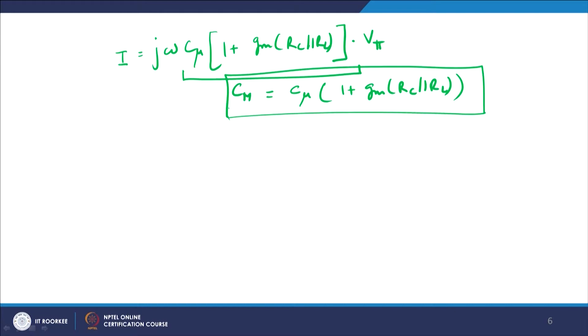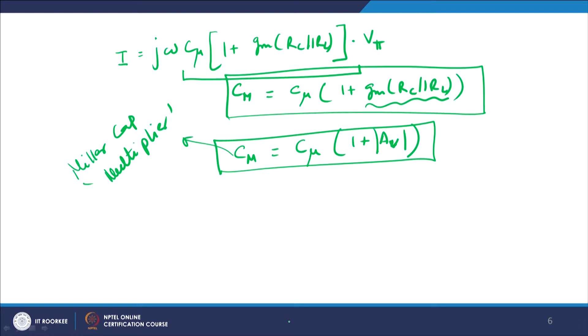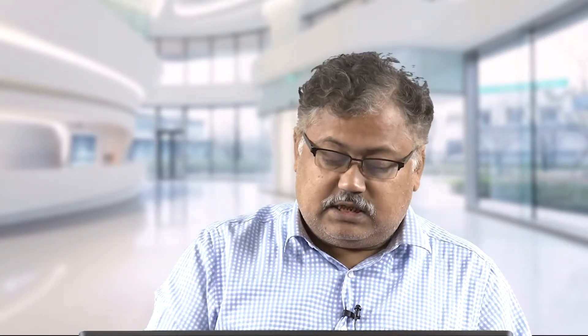So Cm = C_Mu·(1 + Gm·(R_C ∥ R_L)), and since Gm·(R_C ∥ R_L) is nothing but the voltage gain Av, we can write Miller capacitance Cm = C_Mu·(1 + |Av|). This is known as the Miller cap multiplier — it occurs because the open loop gain of the system multiplies C_Mu, appearing in the output as Cm. This component is therefore known as the Miller component.